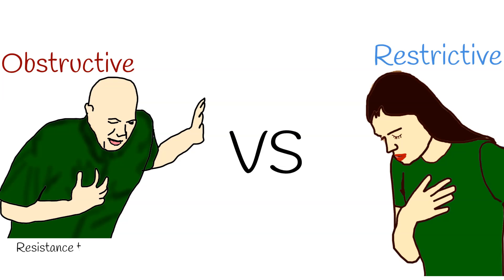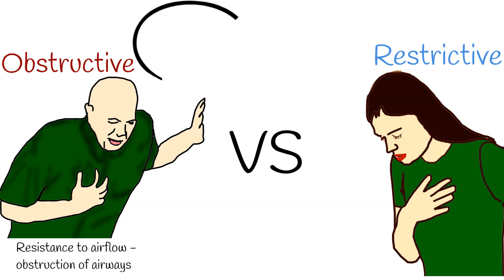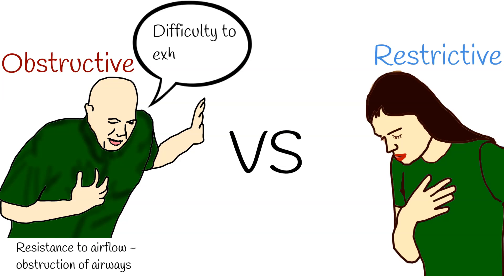Obstructive diseases are when air cannot get out from the lungs. During such disease there is resistance to airflow because of obstruction of airways, causing exhalation problems. It is obstructive disease.